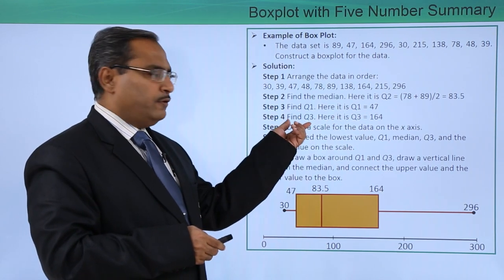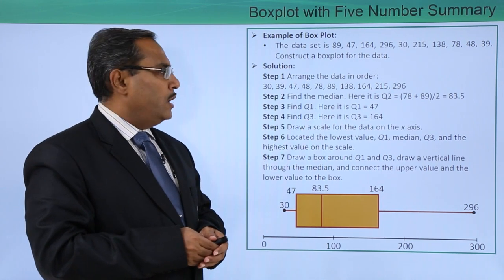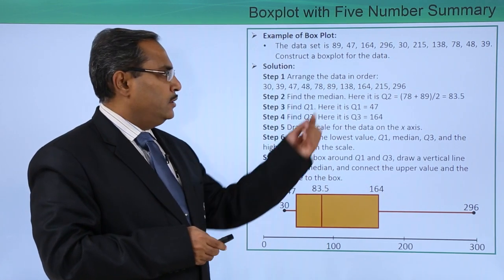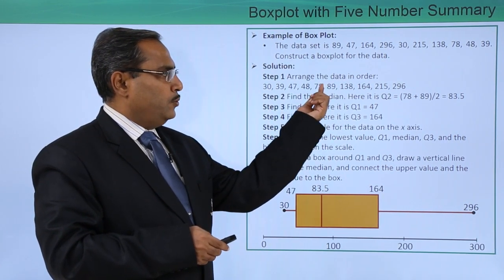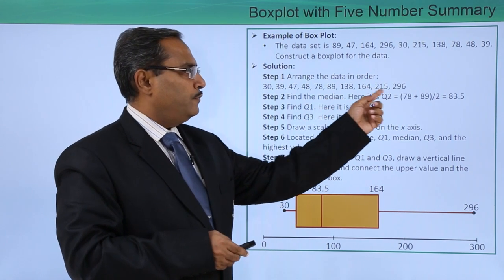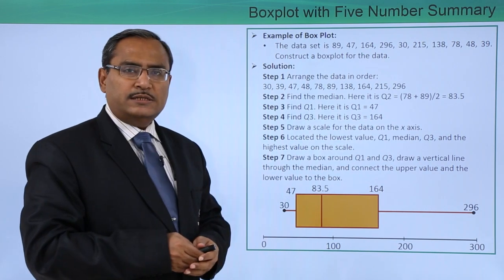Now we are trying to find out Q3. Here Q3 is equal to 164. How did I get this one? So 83.5 is the median, 83.5 will be lying here. In this upper part we are having 1, 2, 3, 4, 5 data. Take the middle most, I am taking this one as 164.